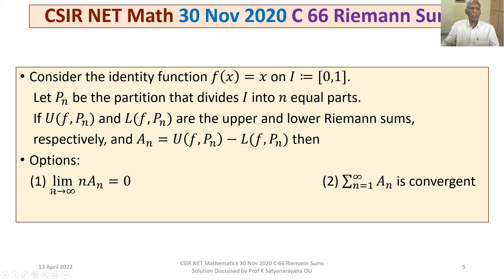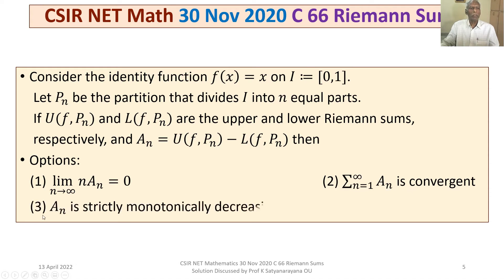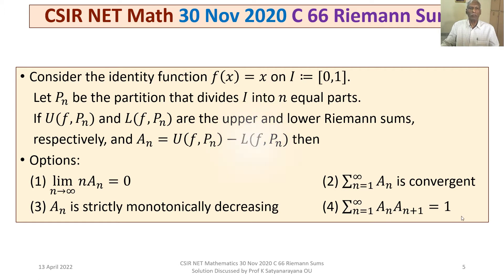Option 1: the limit as n tends to infinity of n·An is 0. Option 2: the series sigma n=1 to infinity of An is convergent. Option 3: An is strictly monotonically decreasing. Option 4: sigma n=1 to infinity of An·An+1 is equal to 1.